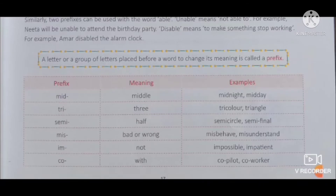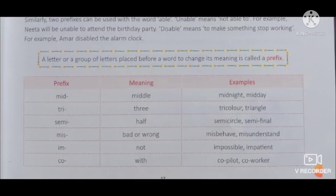The second prefix is 'tri' - its meaning is 'three,' yani teen. Tri-color jo hamara teen rang ka flag hai, triangle - teen khunon wala, yani jinke teen corners hain. The third prefix is 'semi' - its meaning is 'half.' Like semi-circle means half circle, semi-final means the match played before the final. Next, 'mis' means bad or wrong. So misbehave means koi wrong behavior karna. Misunderstand - understanding ke aage mis laga diya, misunderstanding means koi ghalti hai.